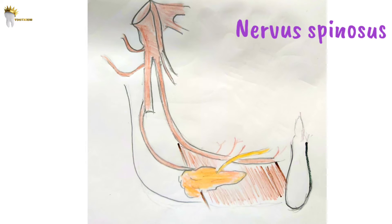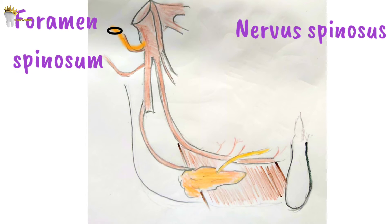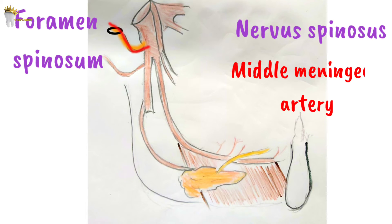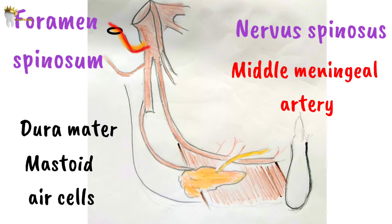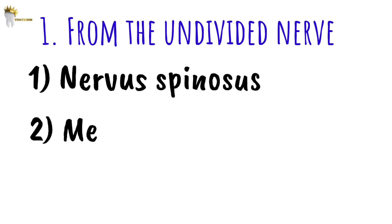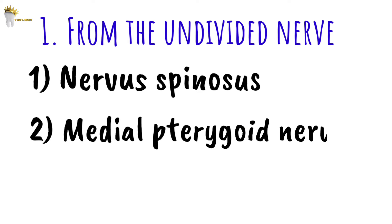The first branch, nervus spinosus, re-enters the cranium through the foramen spinosum. It enters this foramen alongside the middle meningeal artery, and both supply the dura mater and the mastoid air cells.